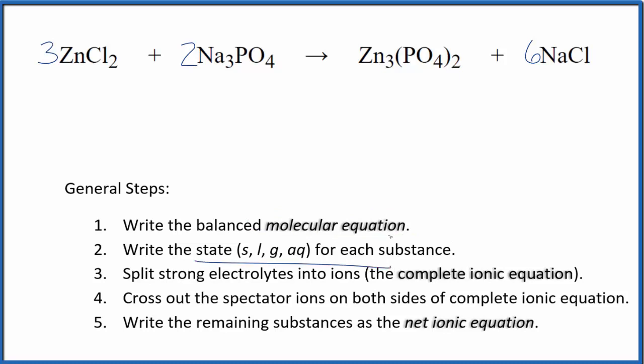Now we can write the state for each substance. Chlorides are very soluble. If you know your solubility rules, we'll put aq for aqueous. That'll dissolve in water. Compounds with sodium are also very soluble, even though in general phosphates aren't. So the sodium phosphate, because we have sodium, that's going to be soluble. But we get to our zinc phosphate.